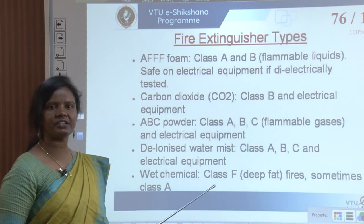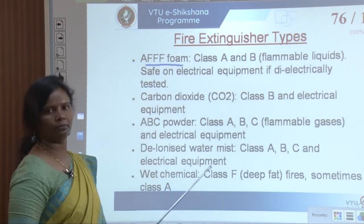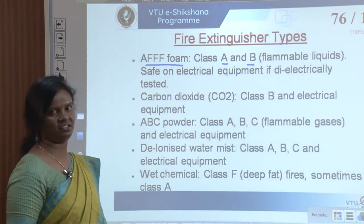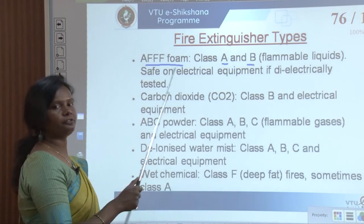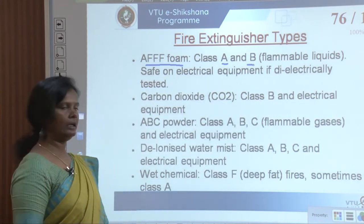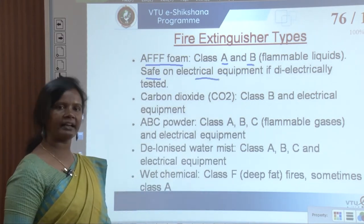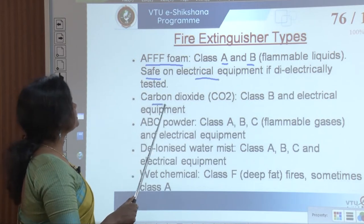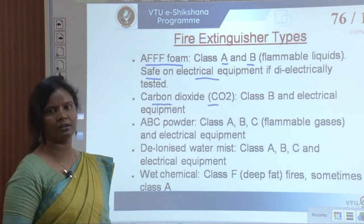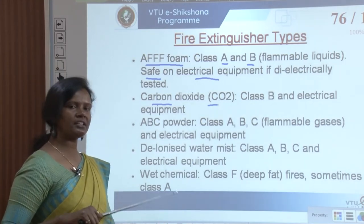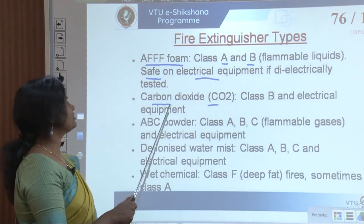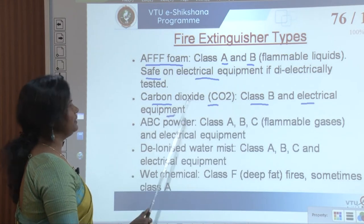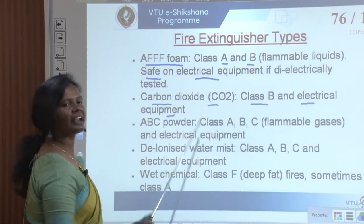The AFFF foam extinguisher is used for Class A and Class B fires, where Class B covers flammable liquids. Foam is used for extinguishing the fire and is also safe on electrical equipment if dielectrically tested. CO2 fire extinguishers address Class B fires and electrical equipment — flammable liquids and electrical fires can be suppressed using CO2.